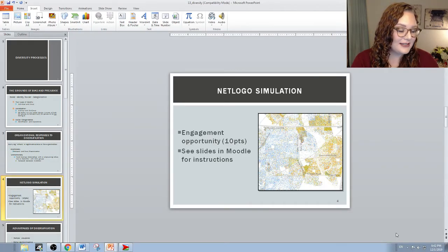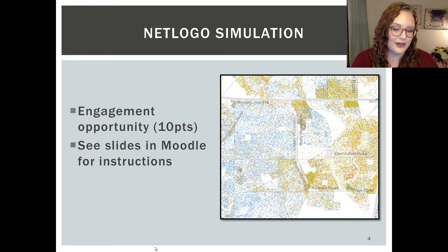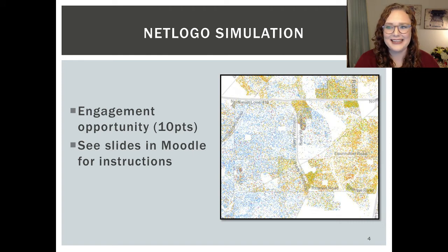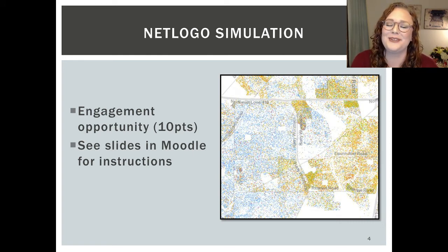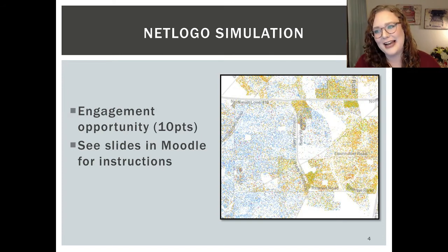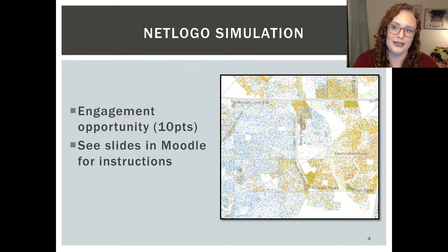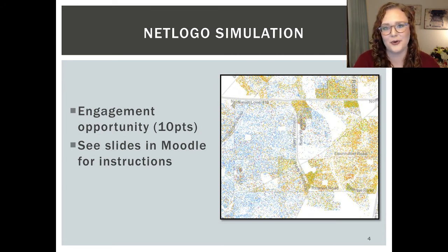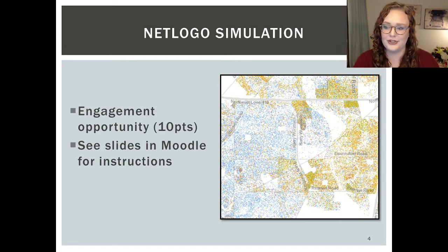If you find this interesting or want to play around with that map a little bit more, you have a chance to do that and get engagement points for it. This is to make up for the engagement points you didn't get a chance to have in class. There's another opportunity up on Moodle right now if you need some more points for quarter four — it's a pretty easy and interesting 10 points, shouldn't take more than 15 or 20 minutes. The slides and instructions are up in Moodle, so go check that out.